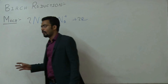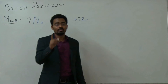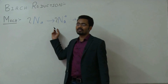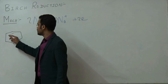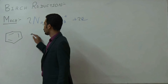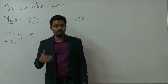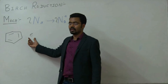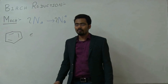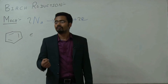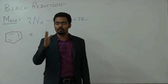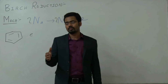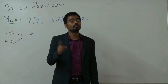So whether it is an aromatic compound or an alkyne, if you have taken the metal, the metal has only one role: it will donate the electron and form a cation. For benzene, collision occurs between the benzene ring's pi bond and the electron. Collision also occurs on the sigma bond, but the sigma bond is stronger than the pi bond, so only pi bond cleavage occurs. If there is a pi bond, which bond will always break? The pi bond.